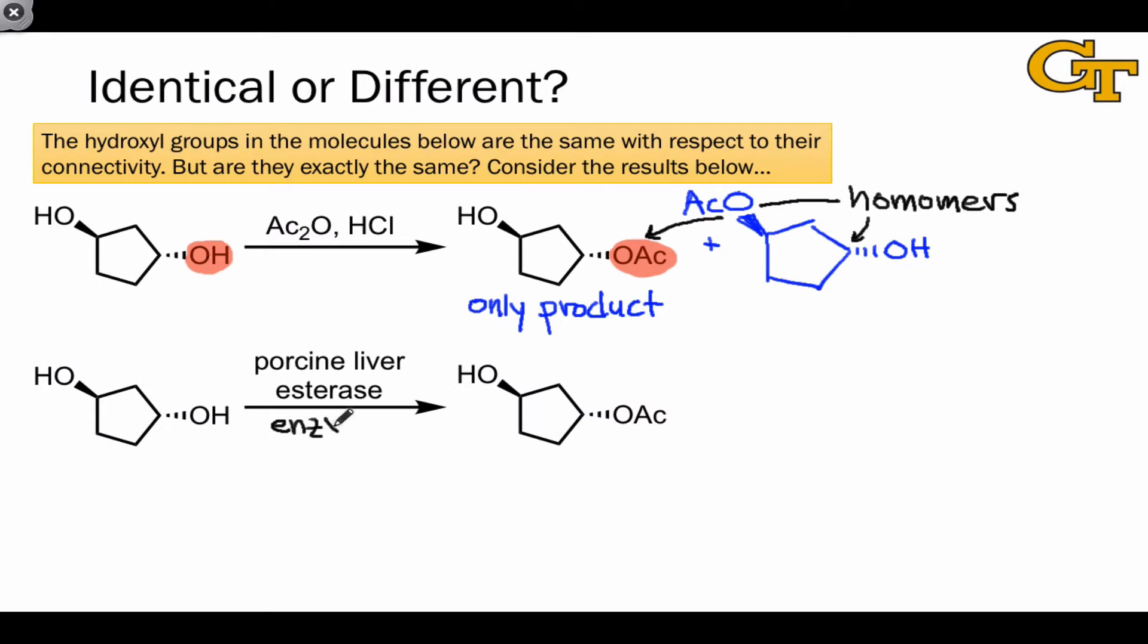We obtain the same result if we use an enzyme to catalyze this process, because here again, the potential other product is homomeric with the structure shown here. And the reason I want to distinguish between these two conditions, we'll look at these two different reaction types in future examples as well, is that the conditions here are wholly achiral. All of the reagents are achiral, but the enzyme is chiral. This will become important later when we discuss the enantiotopic relationship.